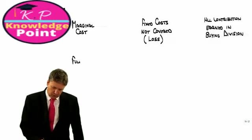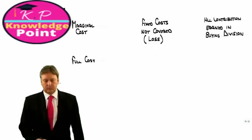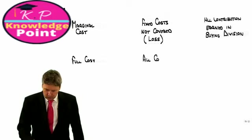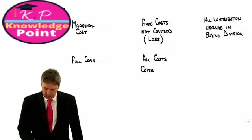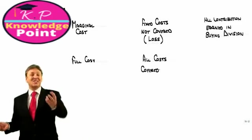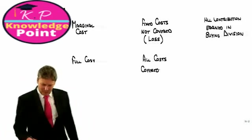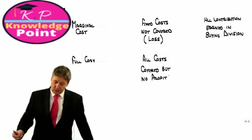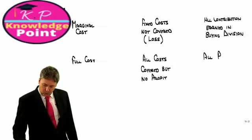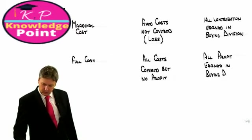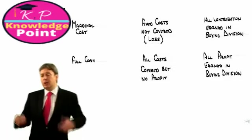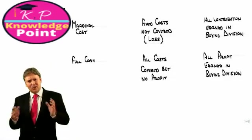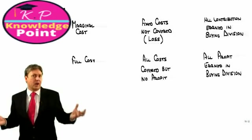Then we look at full cost or total cost. All costs are covered. So we would see the supplying division being slightly happier here. But hold on a moment. But no profit. So still we could say all the profit is earned in the buying division. We could use full cost, but again, there's not much of an incentive here for the supplying division to do anything very special.